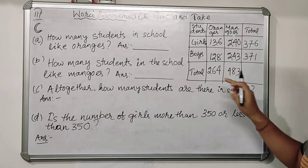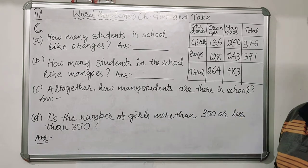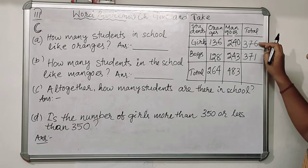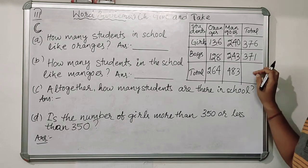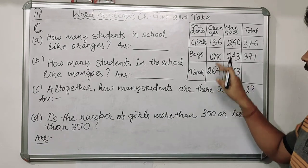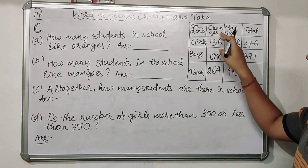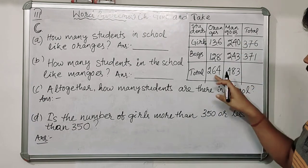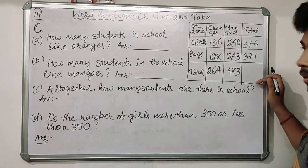You can add this column number plus this column number, or this number plus this number — you will get the same result, because if you consider it this way you get total number of girls plus total number of boys, which is total number of students. If you add both columns, you get total students who like oranges and total students who like mangoes, and together they equal the total number of students.